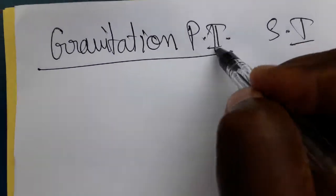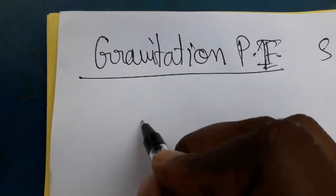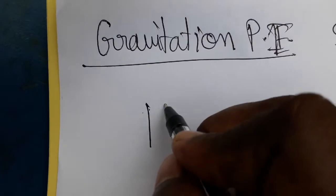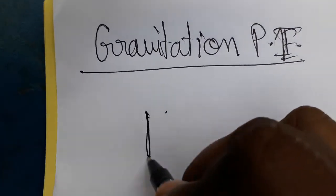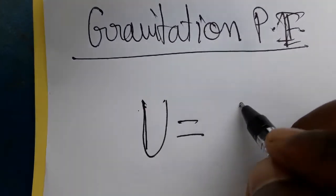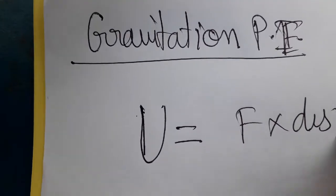We are going to discuss gravitational potential energy as a unit. Gravitational potential energy, symbol U, is force into displacement. Potential energy is force into displacement.